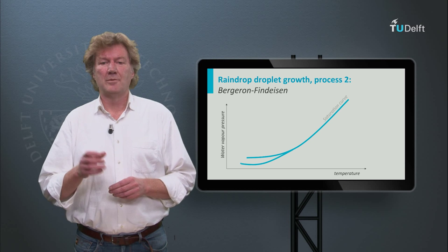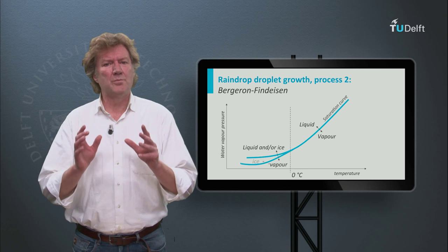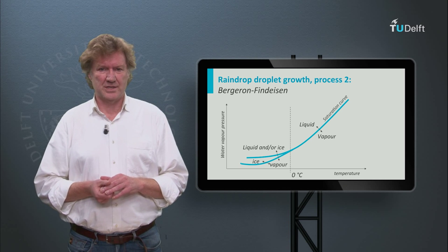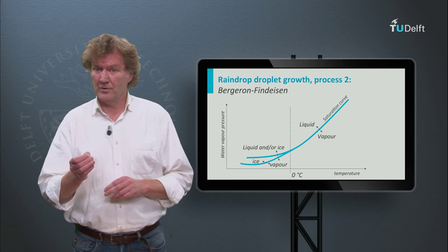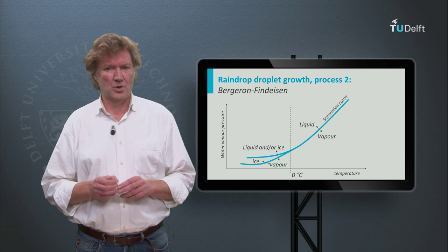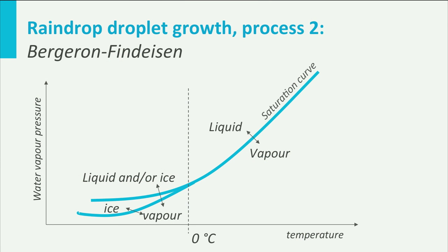Two: the Bergeron-Findeisen process. To understand this process we have to go back to the Clausius-Clapeyron curve of water vapor saturation. We have discussed this before, but now we will also have a look at temperatures below 0 degrees Celsius. There are two lines: one for liquid water and one for ice. Also below the freezing point, liquid water can exist — we call this supercooled water.